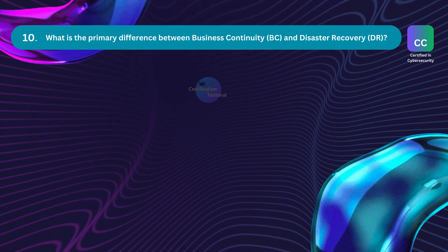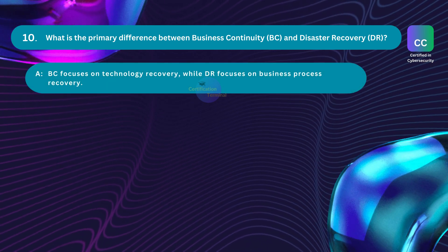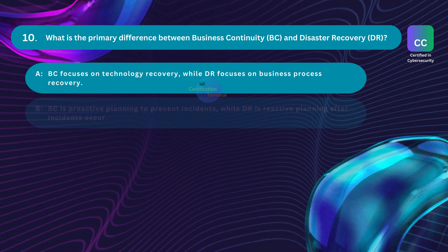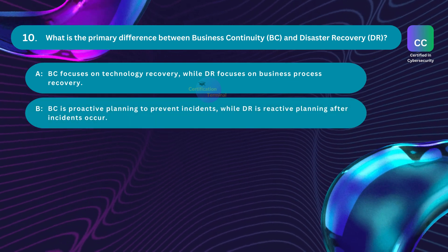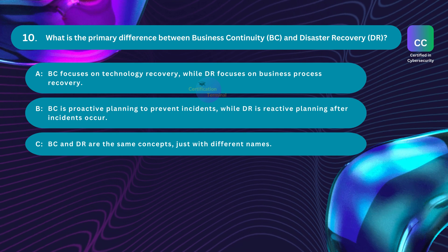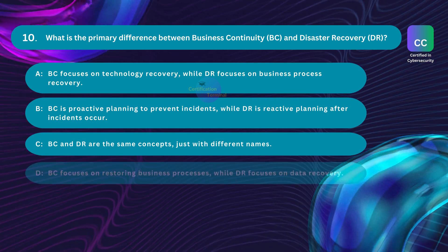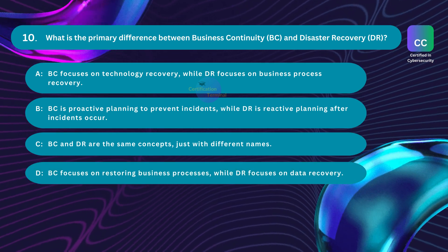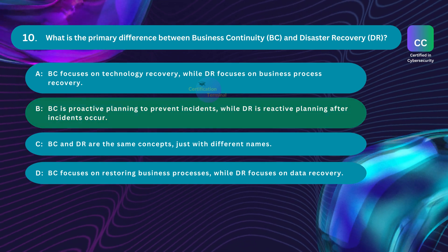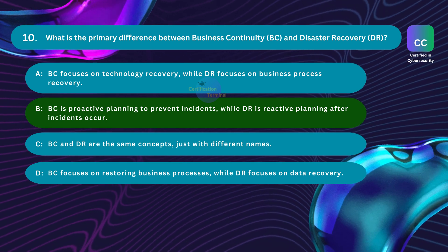Question number ten: What is the primary difference between business continuity and disaster recovery? Option A: business continuity focuses on technology recovery while disaster recovery focuses on business process recovery. Option B: business continuity is proactive planning to prevent incidents while disaster recovery is reactive planning after incidents occur. Option C: they are the same concepts with different names. Option D: business continuity focuses on restoring business processes while disaster recovery focuses on data recovery. The correct answer is Option B.